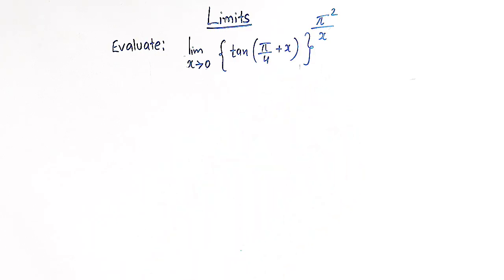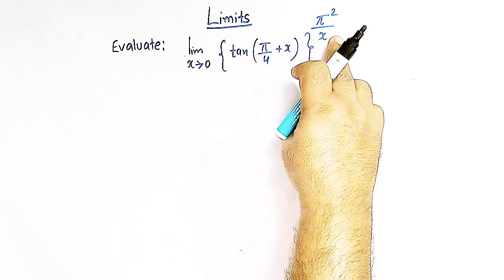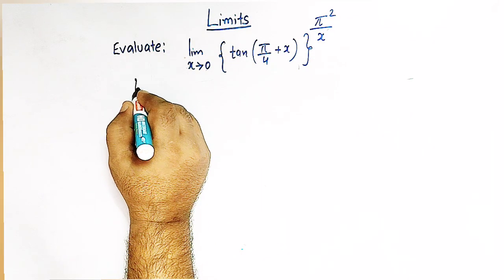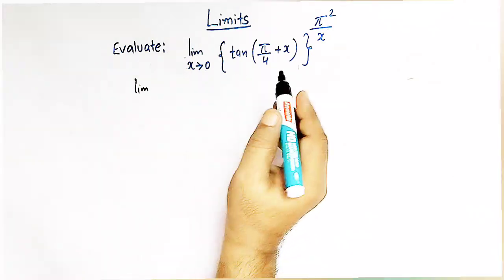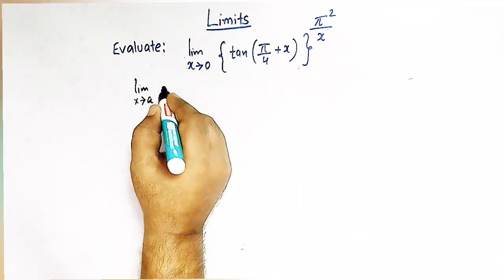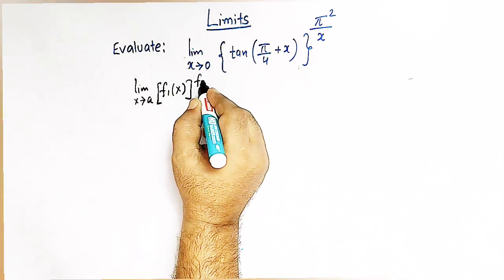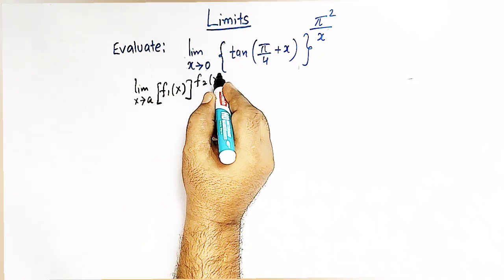To evaluate this type of limit, where we have a function raised to another function, we'll use a particular rule. Let us first quickly see the rule — how to evaluate these kinds of limits. Consider two functions f1 and f2. If we have limit x tends to a of f1(x) raised to f2(x),